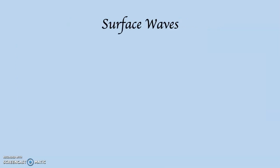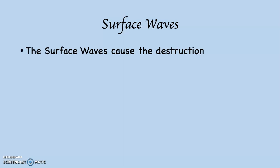The other types of waves are called the surface waves. Like the name indicates, they travel along the surface, and the surface waves are the things that cause the destruction. When you feel that P wave and you're thinking about whether you need to get up, what determines that is the arrival of the surface waves.